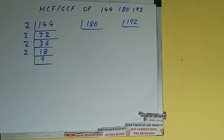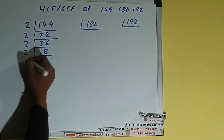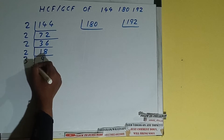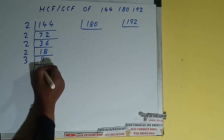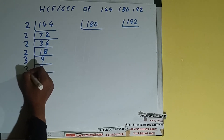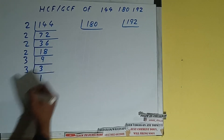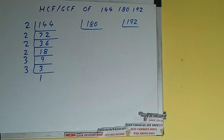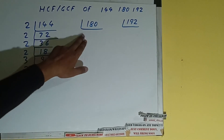18 is again divisible by 2, giving us 9. Now 9 is not divisible by 2 because it is an odd number, so we'll check with the next lowest prime number, that is 3. Is 9 divisible by 3? Yes it is, and we'll get 3. 3 is again divisible by 3, giving us 1. Once we get 1, we are done.